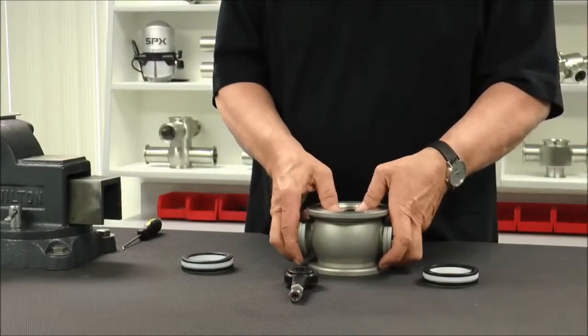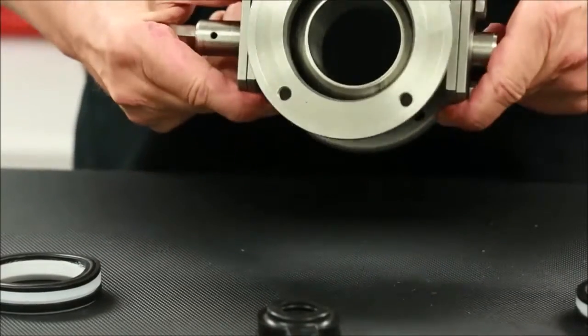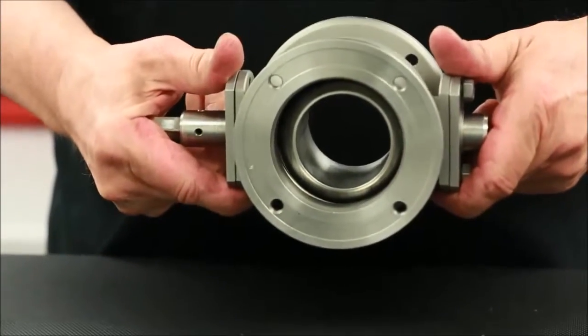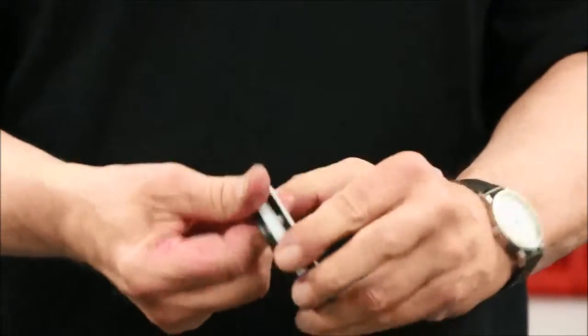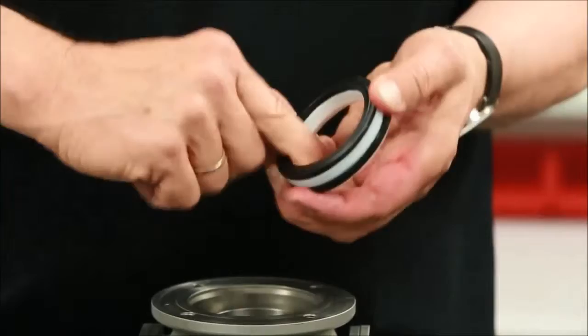Next, carefully turn the valve ball into the open position by hand. Apply a thin layer of lubricant to the ball seal assembly just prior to installation.